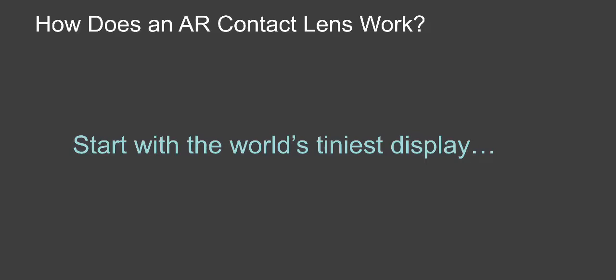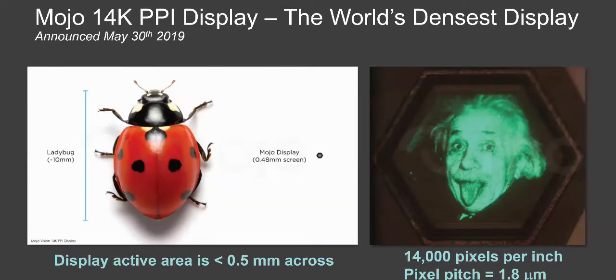So how does an AR contact lens work? You first start with the world's tiniest display. In May of last year, Mojo announced the 14,000 pixel per inch display, which is the world's densest display, or at least it was at that time.